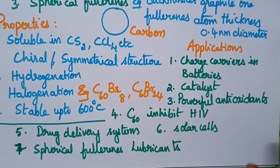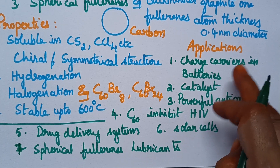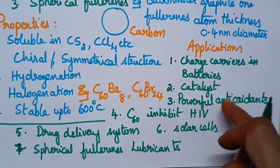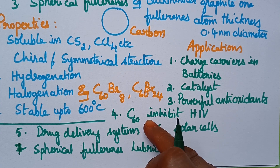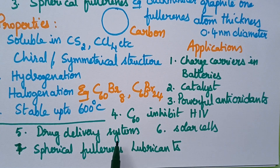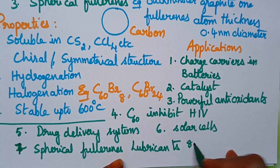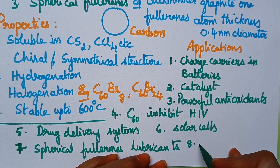To summarize: fullerenes can readily accept electrons and hence act as charge carriers in batteries. They act as good catalysts and powerful antioxidants. Buckminster Fullerene is highly useful to inhibit HIV. These fullerenes are used in drug delivery systems and as lubricants, and can also be used for designing soft ferromagnets.